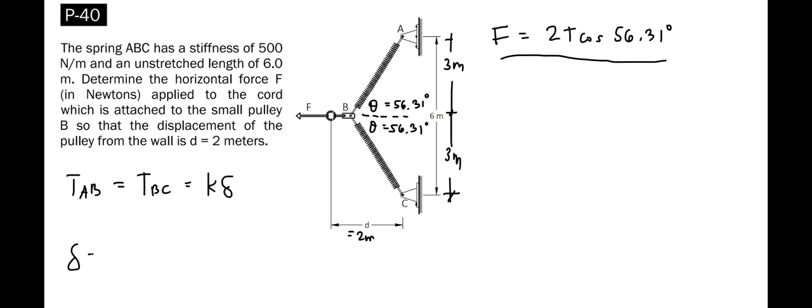To solve for the deformation, we solve for the stretched length of AB or BC minus the unstretched length. For the stretched length of AB, that is equal to the square root of 3 meters squared plus 2 meters squared, using the Pythagorean theorem.